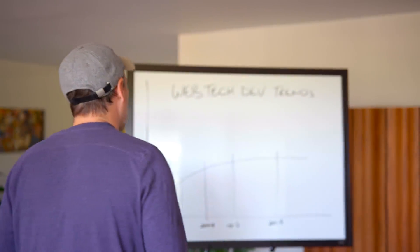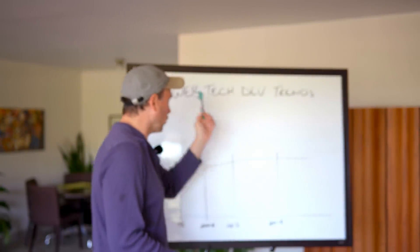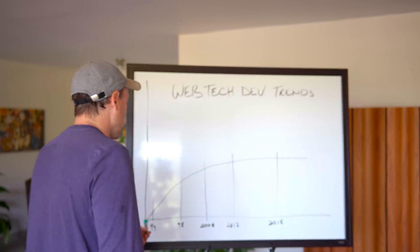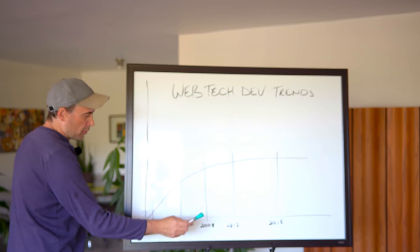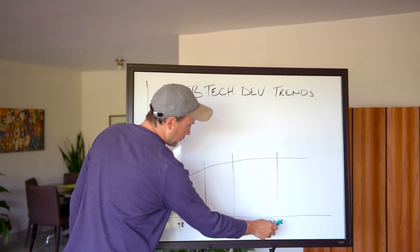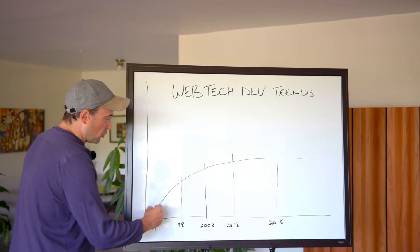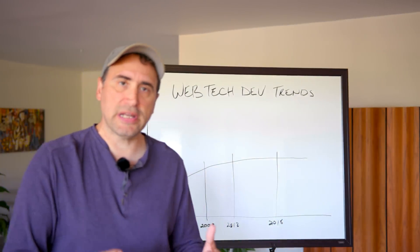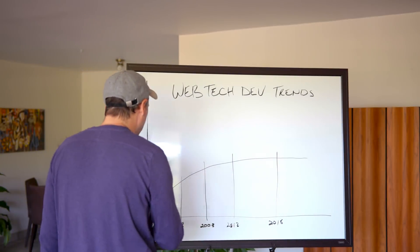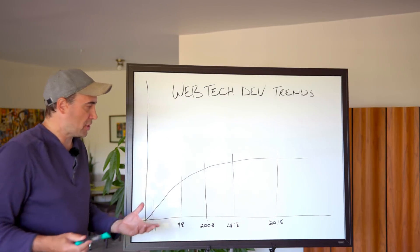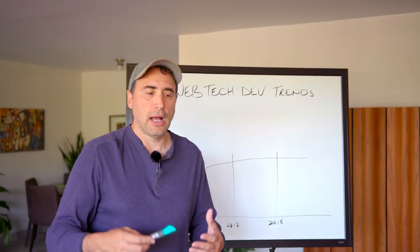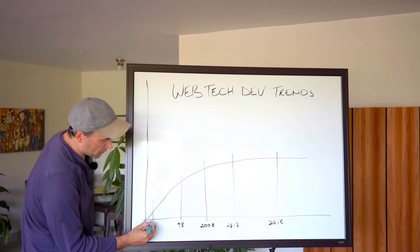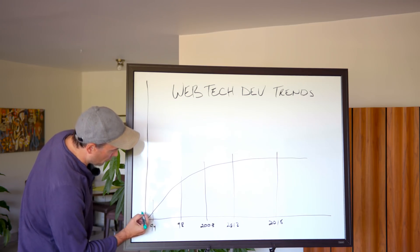Let's take a look at this quickly — web technology development trends. At the bottom here you see 1994, 1998, 2003, 2012, 2018, and this is the rate of development or change in the technology stack. From 1994 to 1998 there was a big change in terms of what was coming out in terms of web tech.